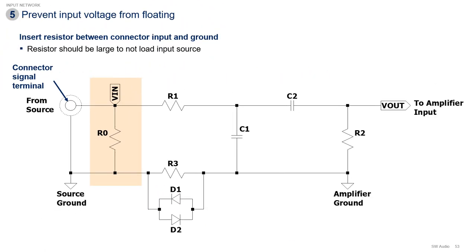Finally, R0 couples the input to the source's ground and to the amplifier's ground through R3, to prevent the input terminal from floating when the input source is disconnected. The value of this resistor should be large to not load the input source. On the next video, which is a practical video, we will assign values to the network and perform some simulations.